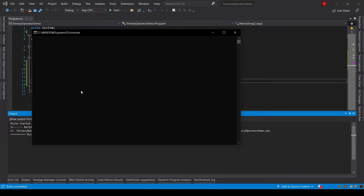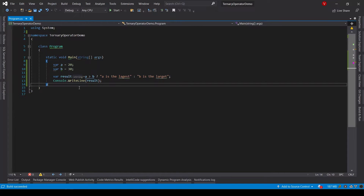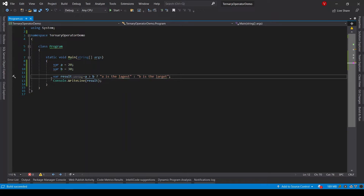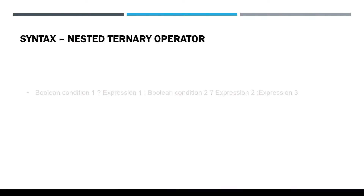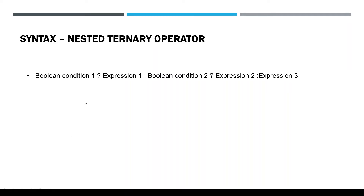Now, just like we have nested if statements in C#, we also have a nested ternary operator in C#. Here is the syntax: we specify boolean condition one, and if that condition is true then expression one after the first question mark will be executed. But if condition one is false, then we specify a second condition after the colon. If the second condition is true then expression two will be executed, and if it is false then expression three will be executed and its result becomes the result of the entire operation.